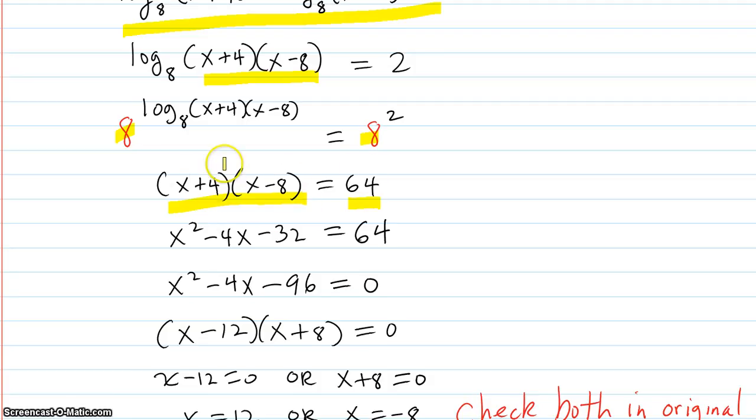Then, foil this out, so you get x squared minus 4x minus 32 when you do that. And that equals 64. You have to subtract 64 from both sides. So that knocks it off of this side and gives you a 0. And negative 64 plus negative 32 is negative 96. And now you've got a trinomial to factor. Maybe it factors, maybe it doesn't. If it factors, good. If it doesn't, use the quadratic formula.